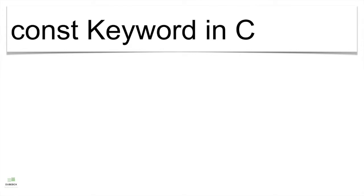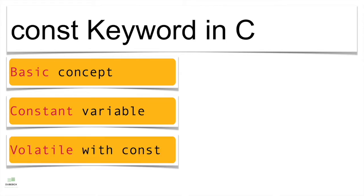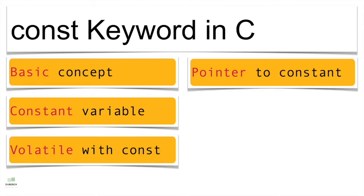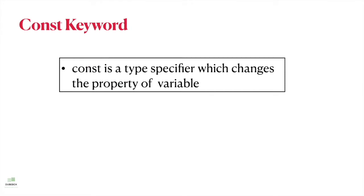In this video we will talk about the use of the const keyword. The topics we will discuss are: basic concept, constant variable, volatile with const, pointer to constant, constant pointer, and const versus macro. I will cover all topics one by one with examples. The const keyword is a type specifier which changes the property of a variable.